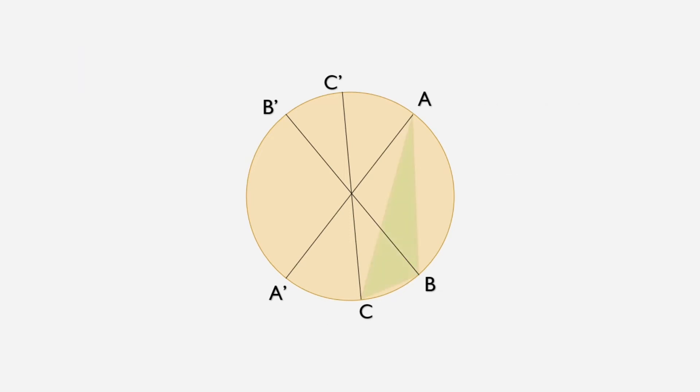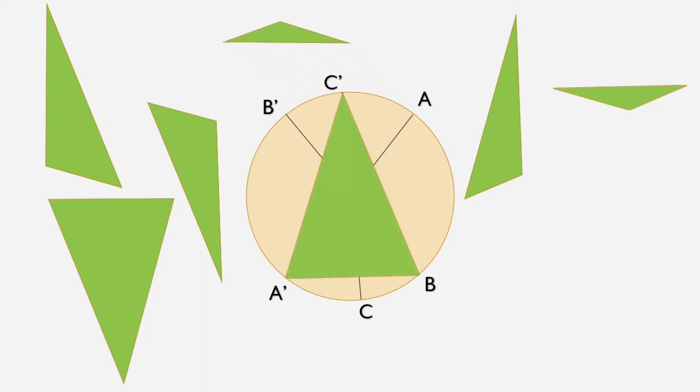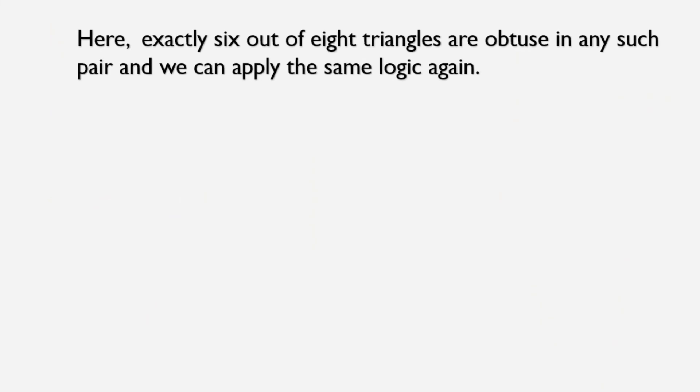Now first triangle is ABC. Here circumcenter is outside the triangle. So this is obtuse. So we have one obtuse triangle over here. Again we have the second obtuse triangle. Here circumcenter is inside the triangle. So it is an acute triangle. And here we have the sixth obtuse triangle. So in total we get six obtuse triangles out of eight. And again with the same logic in any such pair there will be definitely six obtuse triangles.